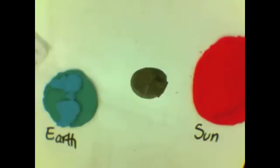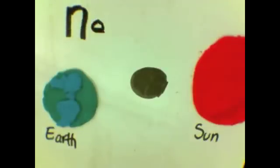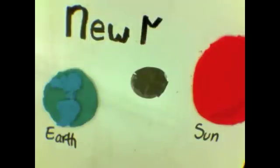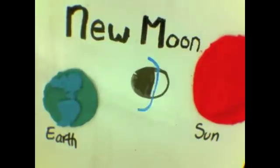The most important phases are the new moon and the full moon. When the moon is between the sun and the earth, we can't see it because the light from the sun is reflecting off the side of the moon that isn't facing the earth. We call this a new moon.